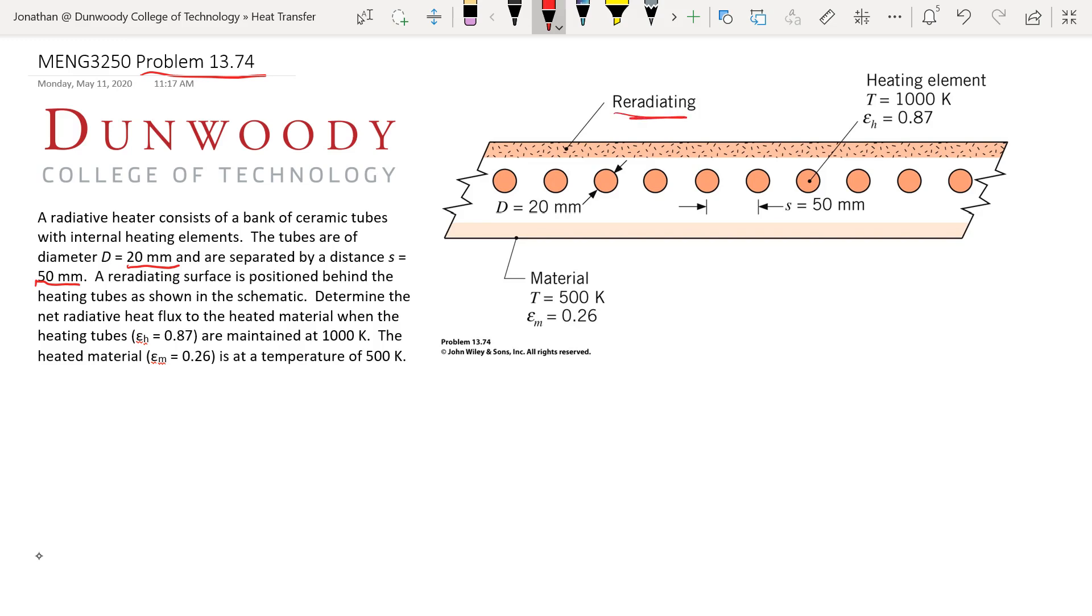We're asked to find the net radiative heat flux to the heated material down here at the bottom when the heating tubes with emissivity of 0.87 are maintained at 1000 Kelvin and the material with the lower emissivity is at 500 Kelvin.